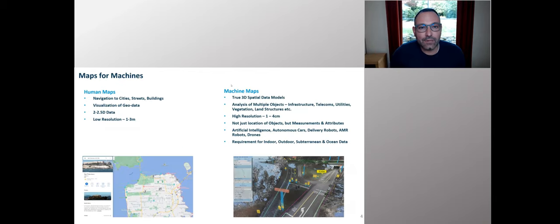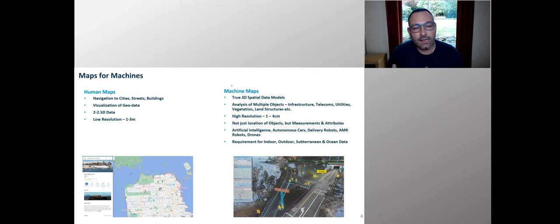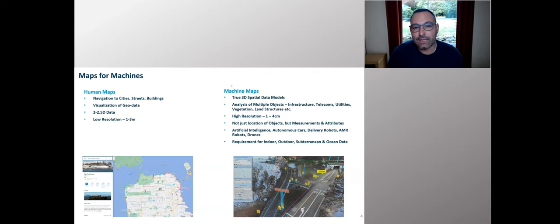Everything we do is really around this concept of building maps for machines. I want to start by explaining the difference between a human map and a machine map. Human maps — the ones on our phones, in our cars, on the web — are really around two use cases: navigating people to an address, and visualization, where you overlay geodata on top of a map. The majority of the data for human maps is 2D, with some 3D elements, and it's relatively low resolution — about one to three meters in terms of accuracy.